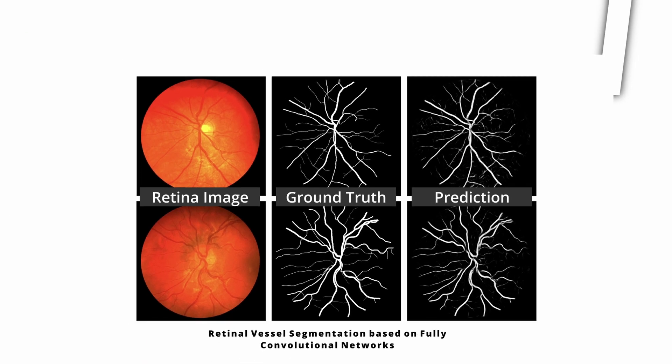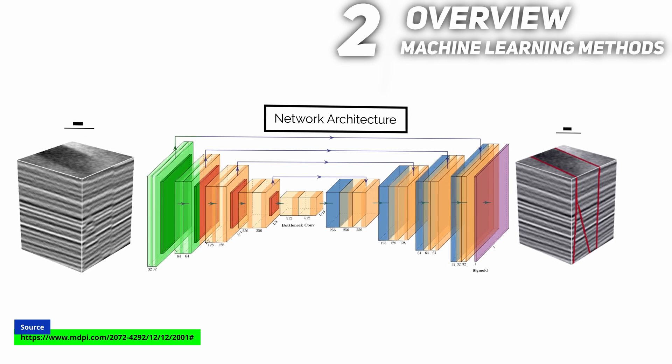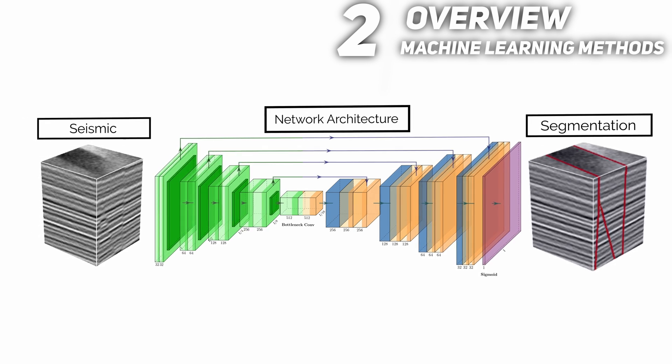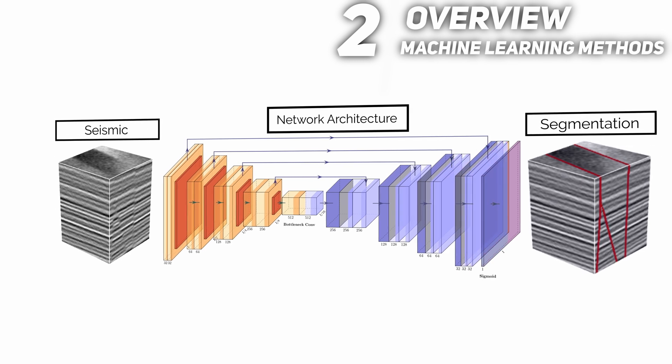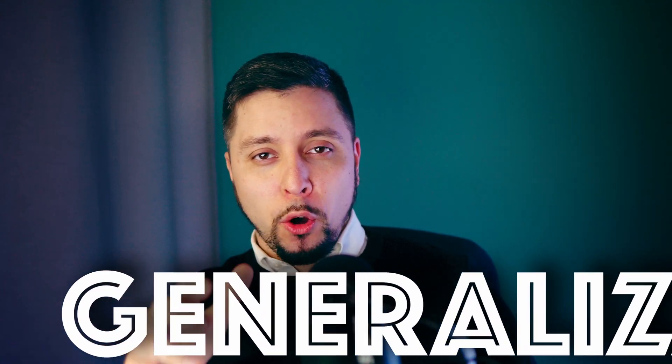Ronneberger introduced the UNET in 2015 for biomedical image segmentation, and it is made up of two paths. The contracting path consists of repeated convolutions with ReLU and max-pooling operations that reduce spatial information while increasing feature information, so that we get an image as input and it goes through the layers of the neural network, producing an encoded representation on the last layer. Using that spatial feature and high-resolution information, the expanding path reconstructs a fault segmentation.